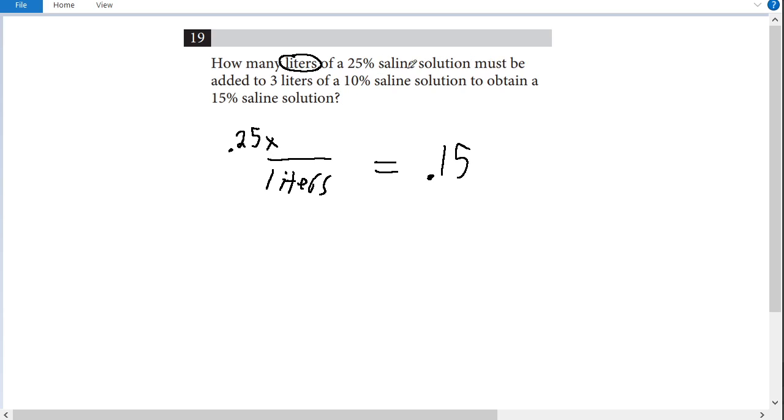And now how much do I have in my three liter solution? Well that's very simply three times the 0.1 of the percent saline, and that will give me my total amount of saline in my three liters.